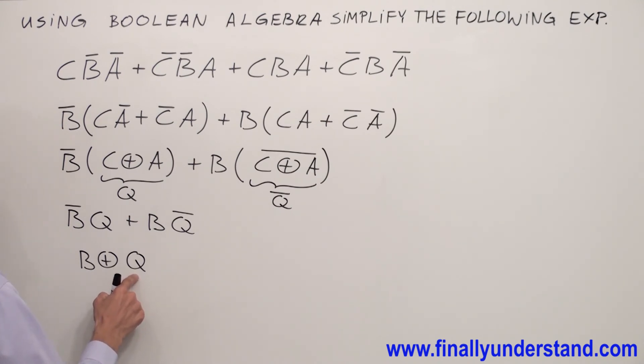We said that Q is equivalent to C XOR A. That's why I'm going to replace Q by C XOR A. So I end up with B XOR C XOR A. This is the solution to our problem.